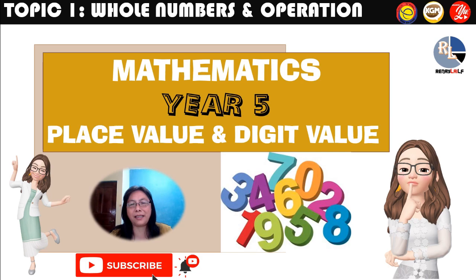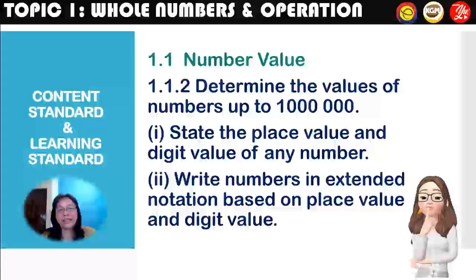Hi boys and girls, we meet again in my channel for Mathematics Year 5 Whole Numbers and Operations. The subtopic is place value and digit value. The content standard is 1.1 Number Value, 1.1.2: to determine the values of numbers up to 1 million — to state the place value and digit value of any number, and to write numbers in extended notation based on place value and digit value.